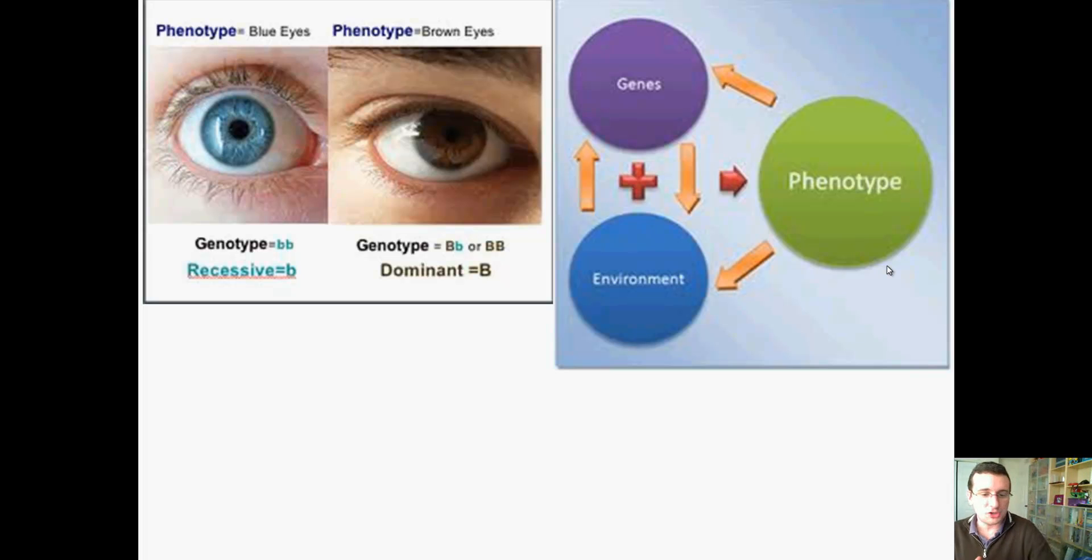I need you to understand that what you actually look like is actually a mixture between the environment and the genes. And we're going to talk about this in another video lecture series. But there's a lot that you can do to change what your code says. Just because your code says you need to be white, it doesn't mean you're going to be white. You can get tanned. Remember that. So, the environment interacts with genetics to actually make your look.